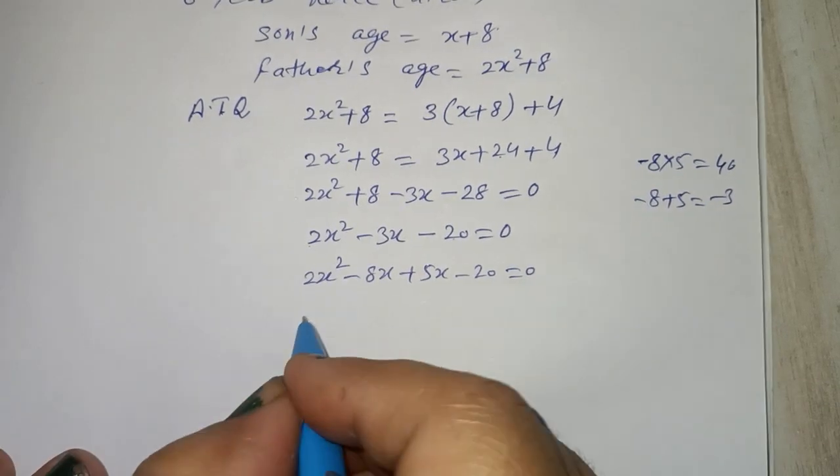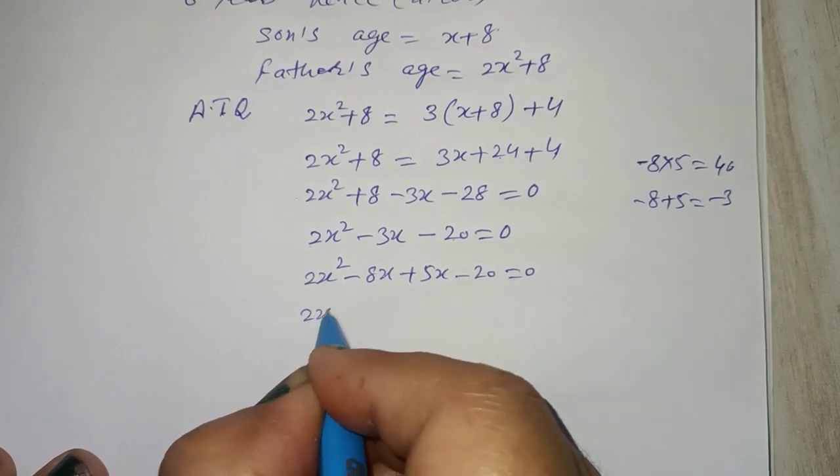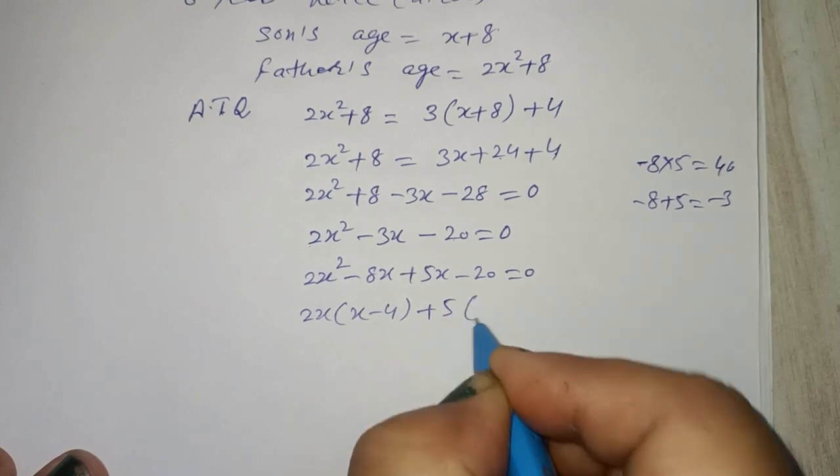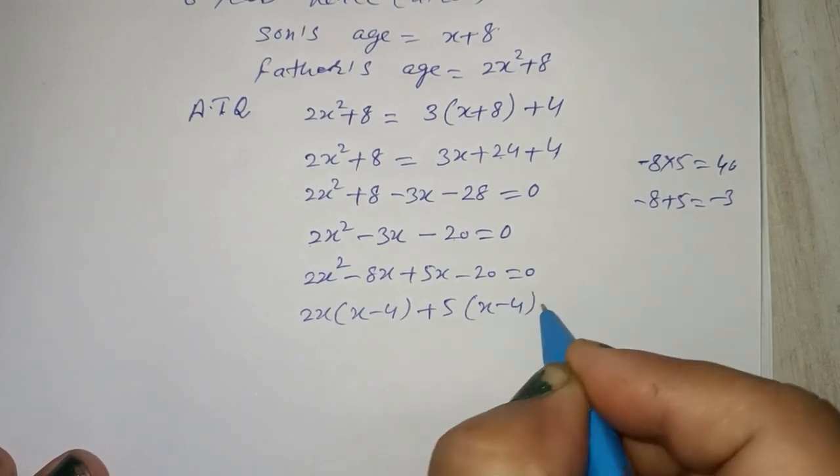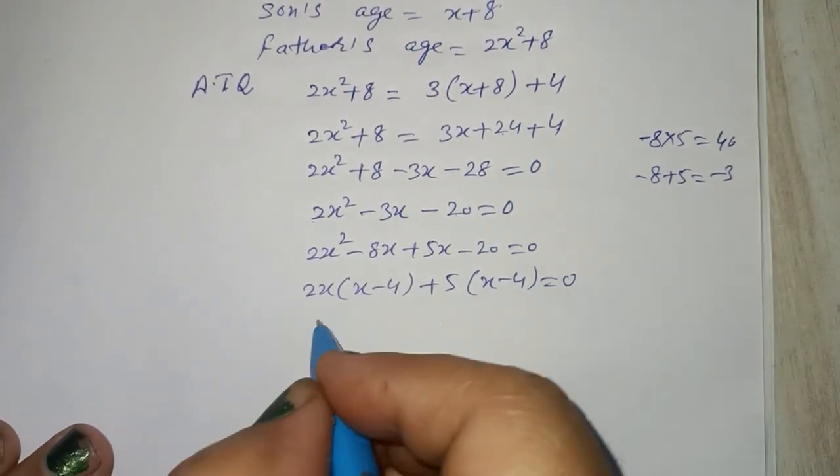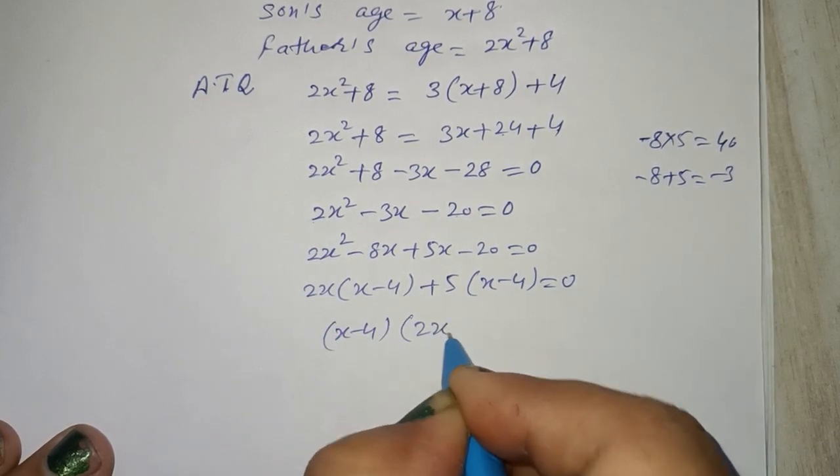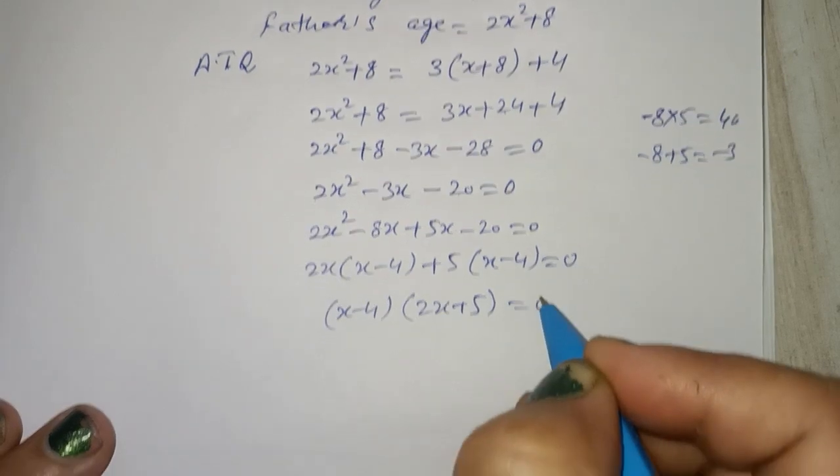2x square minus 8x plus 5x minus 20 is equal to 0. 2x common, x minus 4, plus 5 common, x minus 4 is equal to 0. x minus 4 common. 2x plus 5 is equal to 0.